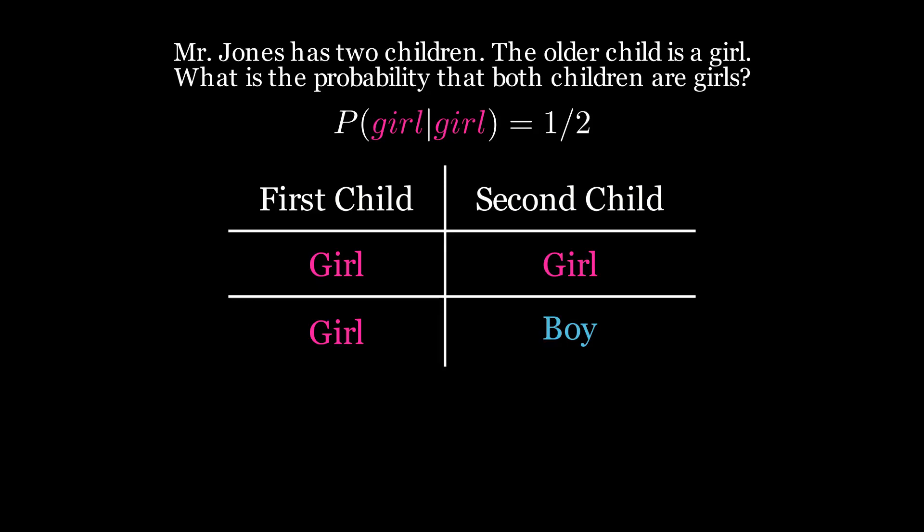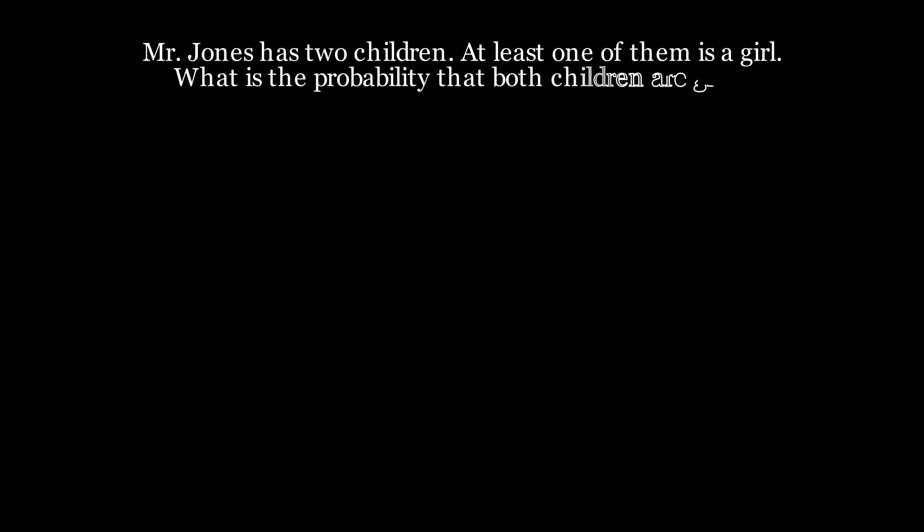Let's put the problem a little differently. Mr. Jones has two children. At least one of them is a girl. What is the probability that both children are girls? The answer to this one could be either one in two or one in three, depending on how you look at it.